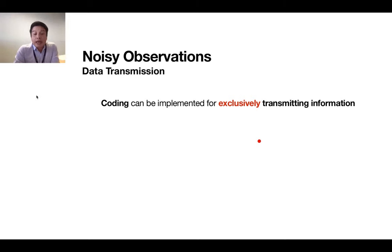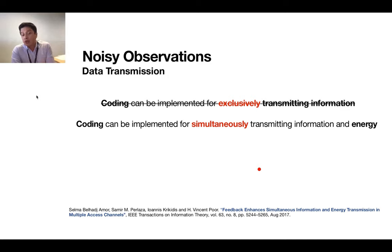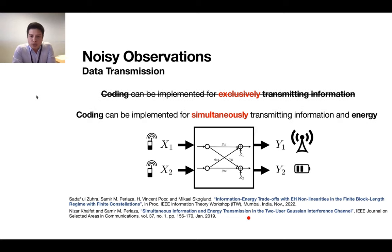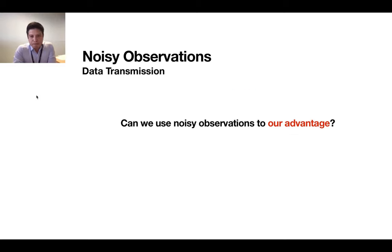For a long time, coding has been implemented exclusively for transmitting information since the early 50s. We have advocated for the fact that coding can be also implemented for simultaneously transmitting information and energy, for instance. In that case, what we have is that one of the outputs of the channel, instead of being used for information, the coding is used for recharging a given battery. Then the key question there is the information rates and energy rates that can be simultaneously and reliably achieved. So we know how to combat now noisy observations.